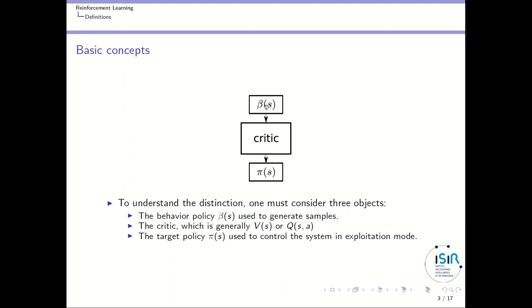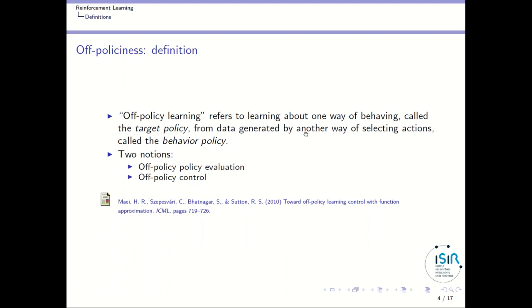In practice, we have an agent performing some trajectories. We learn a critic from these trajectories and then we want to get a very good policy from this critic. Off-policy learning refers to learning one way of behaving — called the target policy — from data generated by another way of selecting actions — called the behavior policy. You have the behavior policy, you generate data from it, and then you want to learn some target policy.